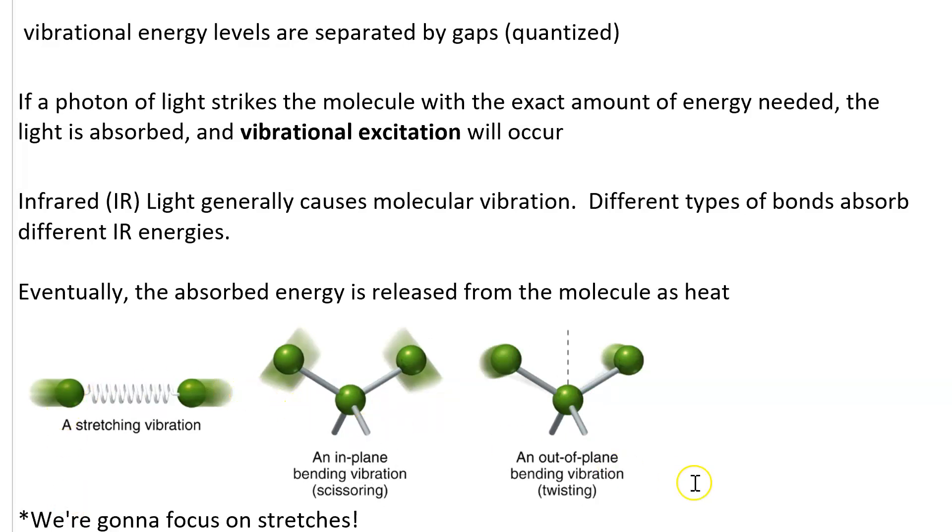Here are some different types of vibrations. There are stretching vibrations where the distance between two atoms oscillates as they get closer to each other and farther apart. Think of Hooke's Law with the spring. You can also have scissoring vibrations. These are in-plane bending vibrations where the bond angle will vary.